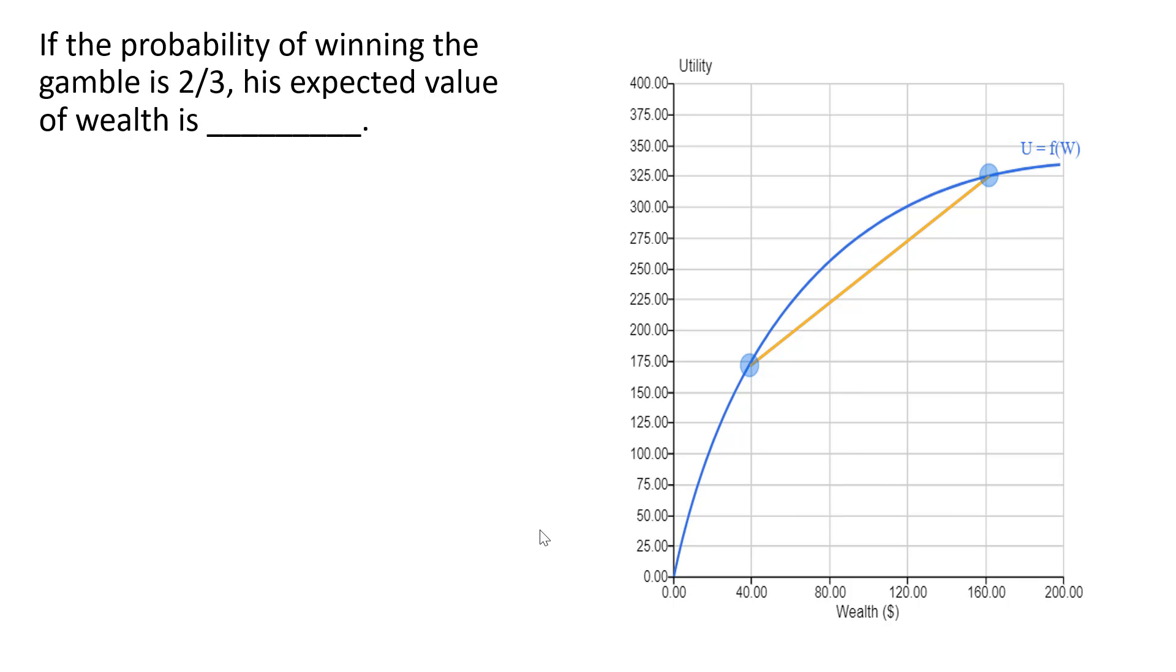If the probability of winning the gamble is 2/3, his expected value of wealth is 2/3 times $160, where $160 is if he wins the gamble. There's a 2/3 chance he'll win the gamble and get $160.